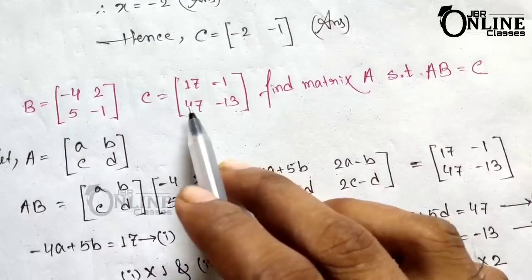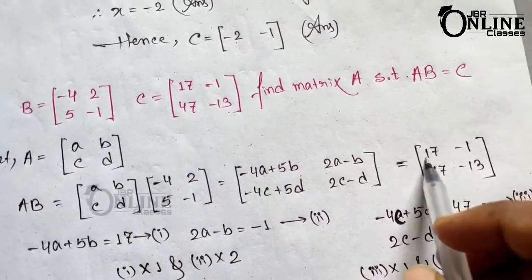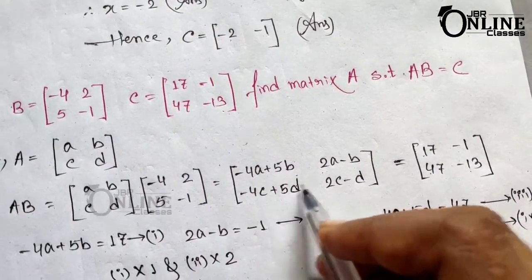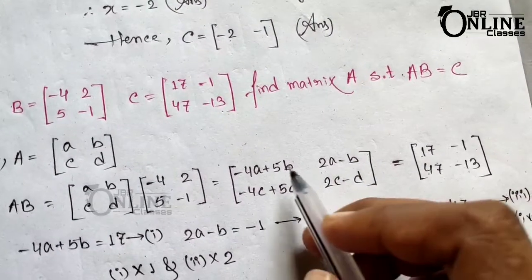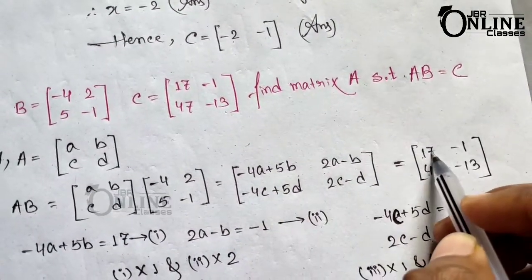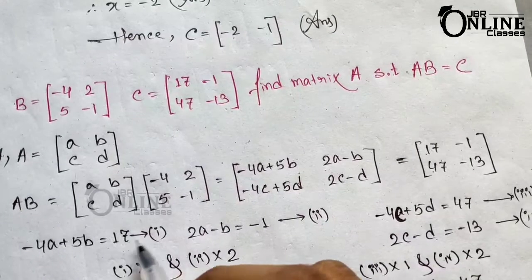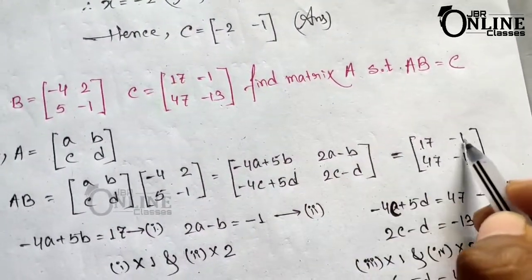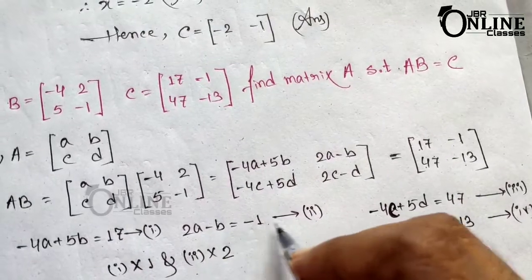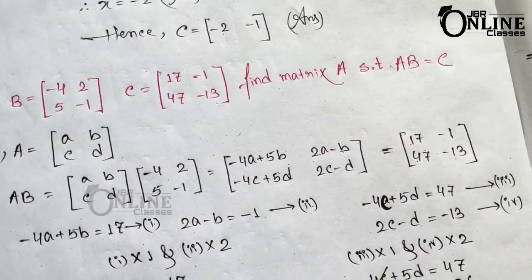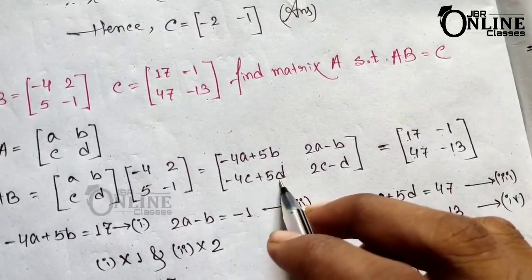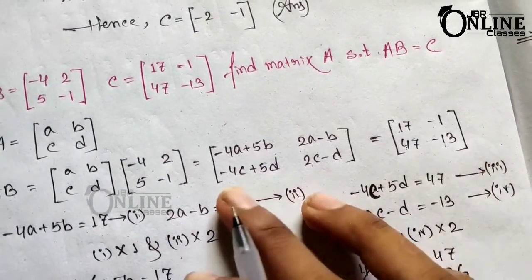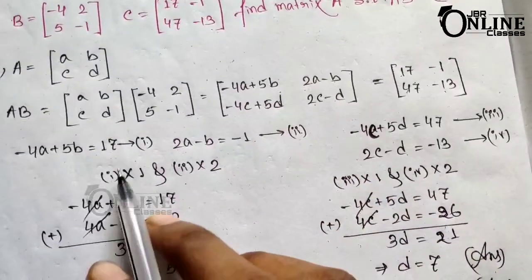Since AB equals C, we compare with C equals [7, -1; 47, -13]. Comparing elements gives four equations: equation 1: minus 4a plus 5b equals 7; equation 2: 2a minus b equals minus 1; equation 3: minus 4c plus 5d equals 47; equation 4: 2c minus d equals the fourth element.